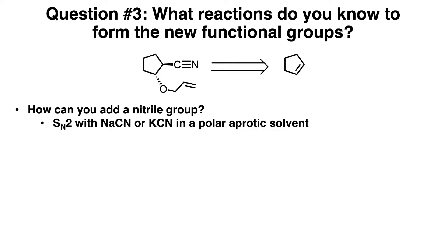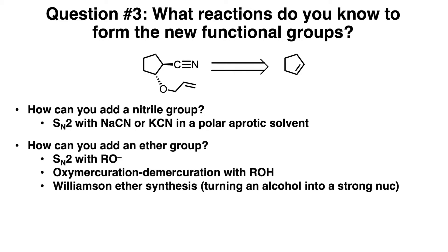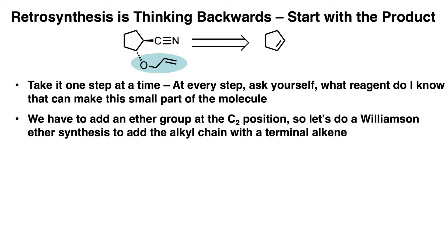Now the third question you'll ask is: what reactions do you know that can form these new functional groups? How can you add a nitrile group that is on a secondary carbon? Well, you could use an SN2 reaction with either NaCN or KCN in a polar aprotic solvent. And how can you add an ether group? There are several ways to do this — you could use an SN2 reaction with RO⁻, you could use oxymercuration-demercuration with ROH, or you could do a Williamson ether synthesis by turning an alcohol into a strong nucleophile. There are several routes to choose from, so just pick one and start exploring it.